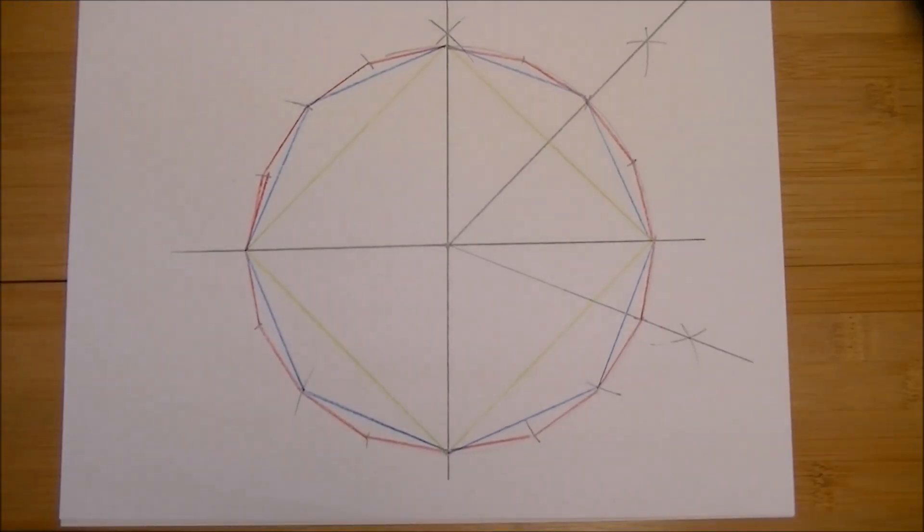So there you have it. The green square, blue octagon, and a red 16-sided figure. You can use this technique for drawing pretty much any type of regular polygon just by dividing each time in half.